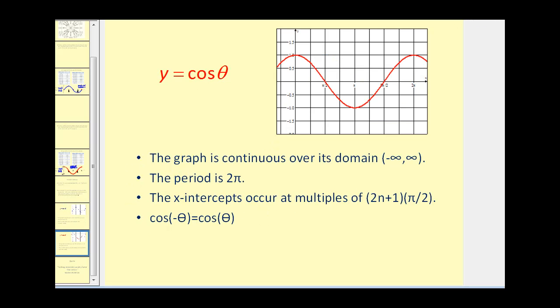And summarizing some properties about y equals cosine theta. Continuous over its entire domain. Period is two pi. The x-intercepts occur at odd multiples of pi over two radians. And cosine negative theta is equal to cosine theta, because it is an even function or symmetrical across the y-axis. Again, we'll talk more about that later. And I hope you found this video helpful. Thank you for watching.